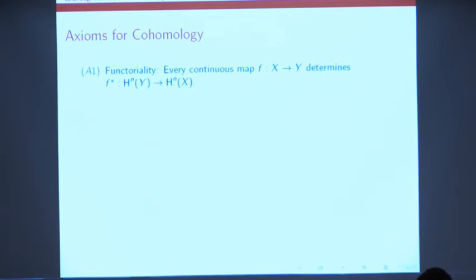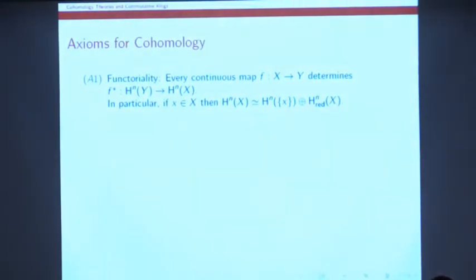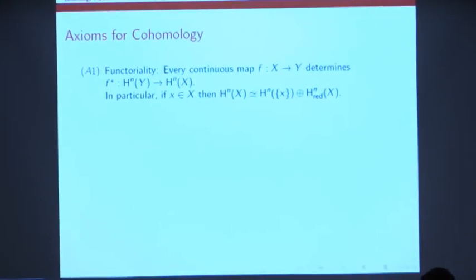So cohomology is a contravariant functor. A continuous map from X to Y gives you a map on cohomology going in the other direction. A consequence of this is that if you have a non-empty space, its cohomology always splits as a sum of the cohomology of a point and an auxiliary summand, which you call the reduced cohomology of X.